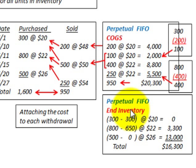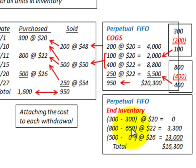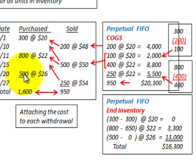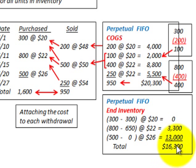For ending inventory under perpetual FIFO, all 300 of the oldest units at $20 were used, leaving nothing from that group. From the 800-unit batch, 650 were used, leaving 150 at $22 each, totaling $3,300. The 500 newest units at $26 each were untouched, totaling $13,000. Total ending inventory is $16,300.